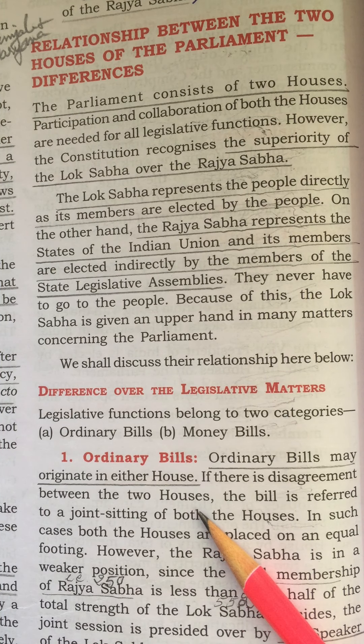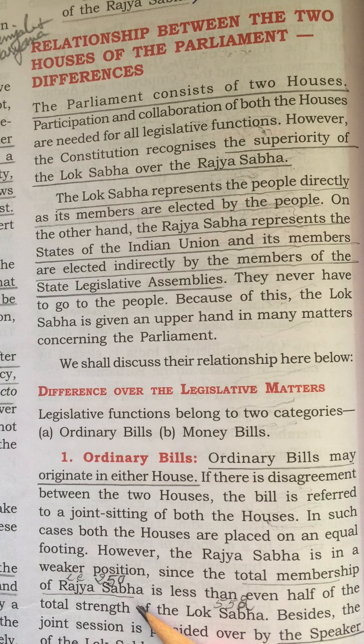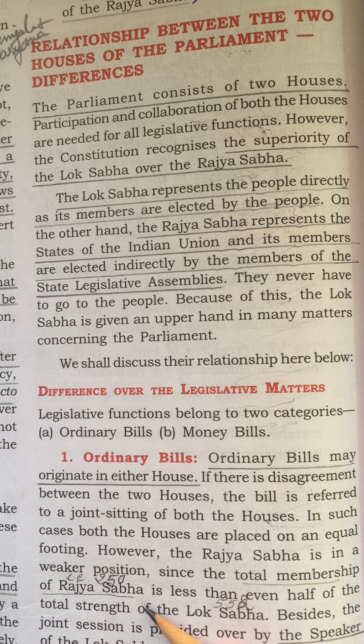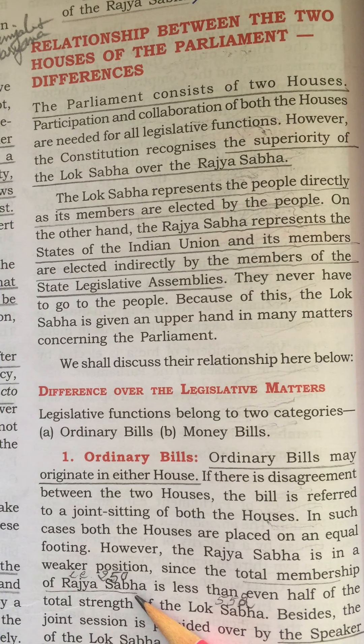However, Rajya Sabha is in a weaker position since its total membership of 250 is less than even half of the total strength of Lok Sabha, which is 552. The strength of Rajya Sabha is only 250 compared to Lok Sabha's 552. Besides the strength, the joint session is presided over by the Speaker, who comes from the Lok Sabha.